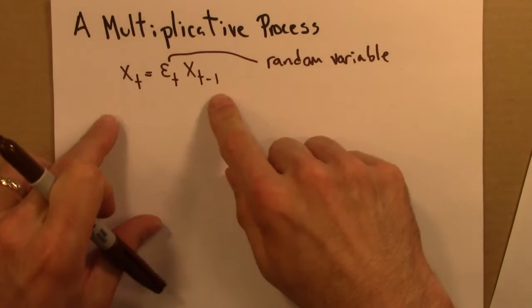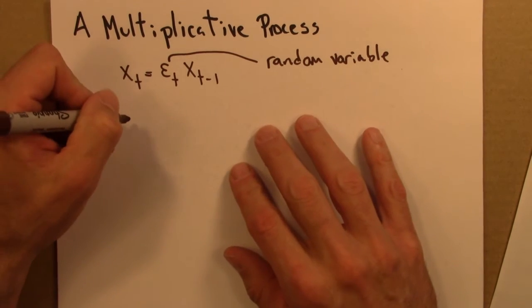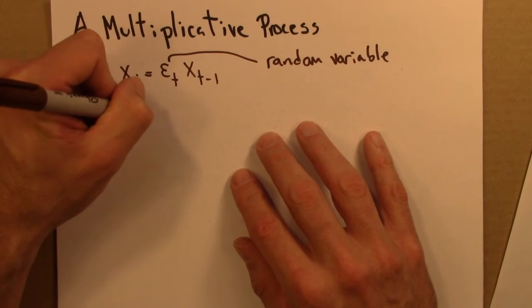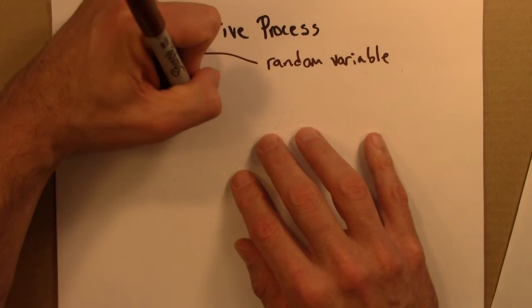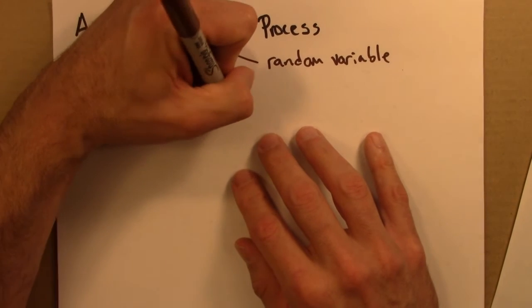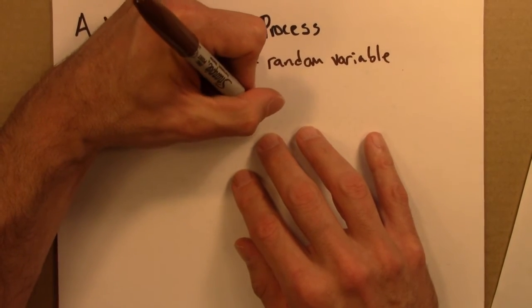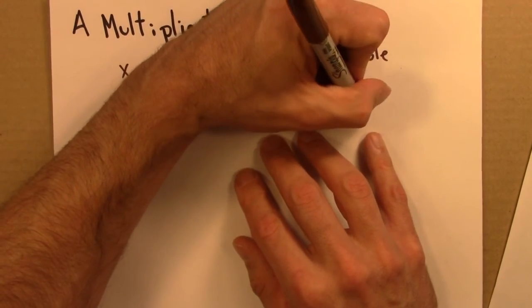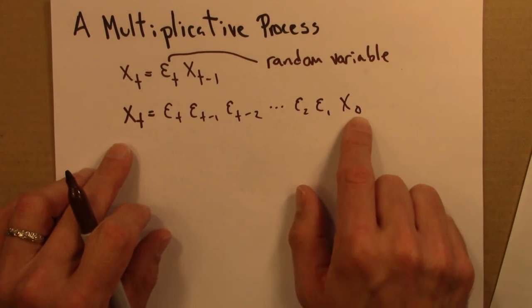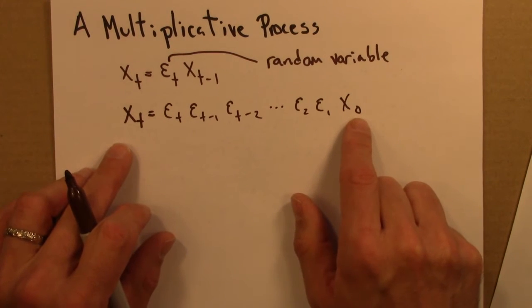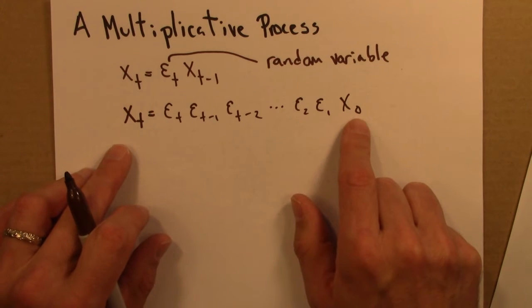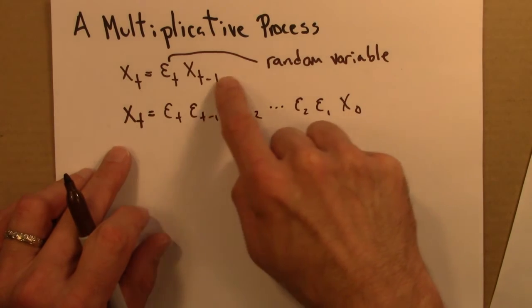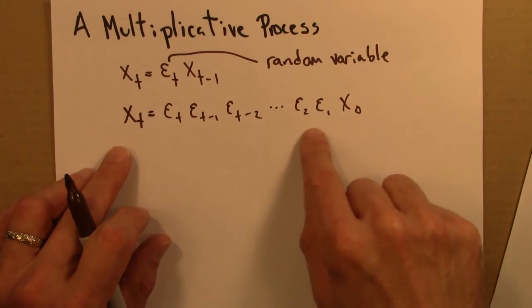So to write this process out more fully, this is just one step. Here's the situation. So at time t, we get there as follows. So we start with x0, our initial investment, the initial size of whatever this is. And then it grows by this percent, and then this percent, and so on. And we multiply all of these growth factors, all of these percents together,